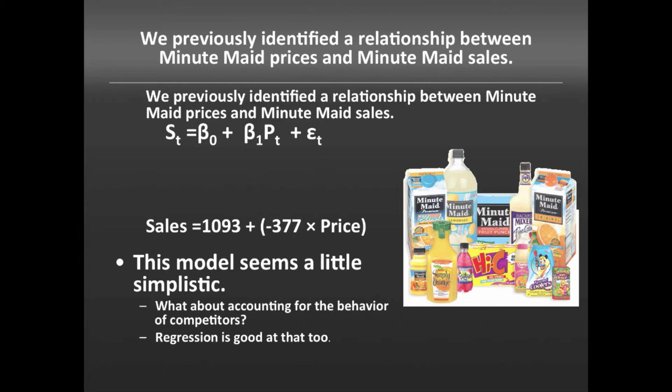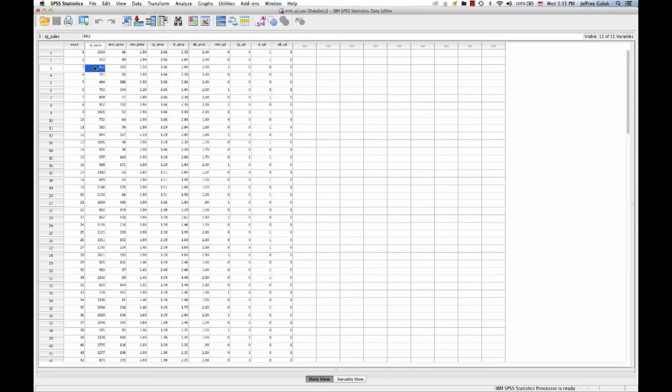But this model seems a little bit simplistic. For instance, we don't take into account competitive behavior, and so regression is actually very good at doing that. It's good at taking into account lots of other factors so that we can create a much more sophisticated model that predicts something like sales. Let's jump right over to SPSS and take a look and see if we can predict sales as a function not just of Minute Maid's prices, but also the prices of its competitors.